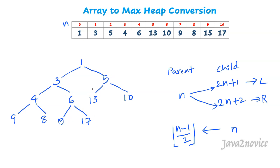We will apply a top-to-bottom approach to heapify each node. This subtree is not following max heap properties — 6 is the smallest compared to its child node values. So let's swap the parent node value with the maximum child node value. 17 is the maximum child, so we swap: 17 goes up and 6 goes down. We update the array accordingly. Since we have reached the leaf node level, no further heapification is needed.